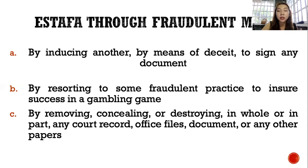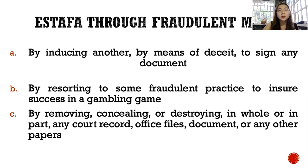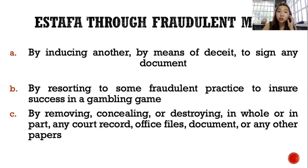Regarding the gambling fraud — by resorting to fraudulent practice, for example, in a cockfight, the offender removed the blade from the feet of the rooster and thereby won the game. This falls under the second punishable act. The third punishable act — removing, concealing, or destroying court records, office files, documents, or other papers — is self-explanatory.